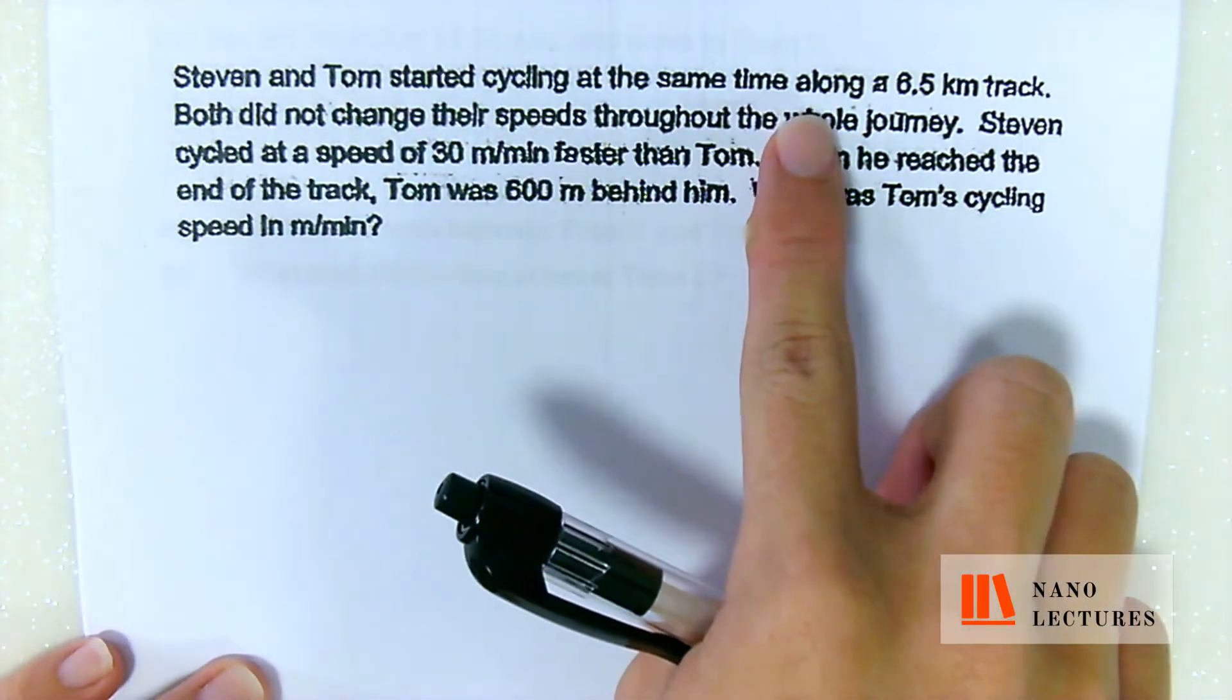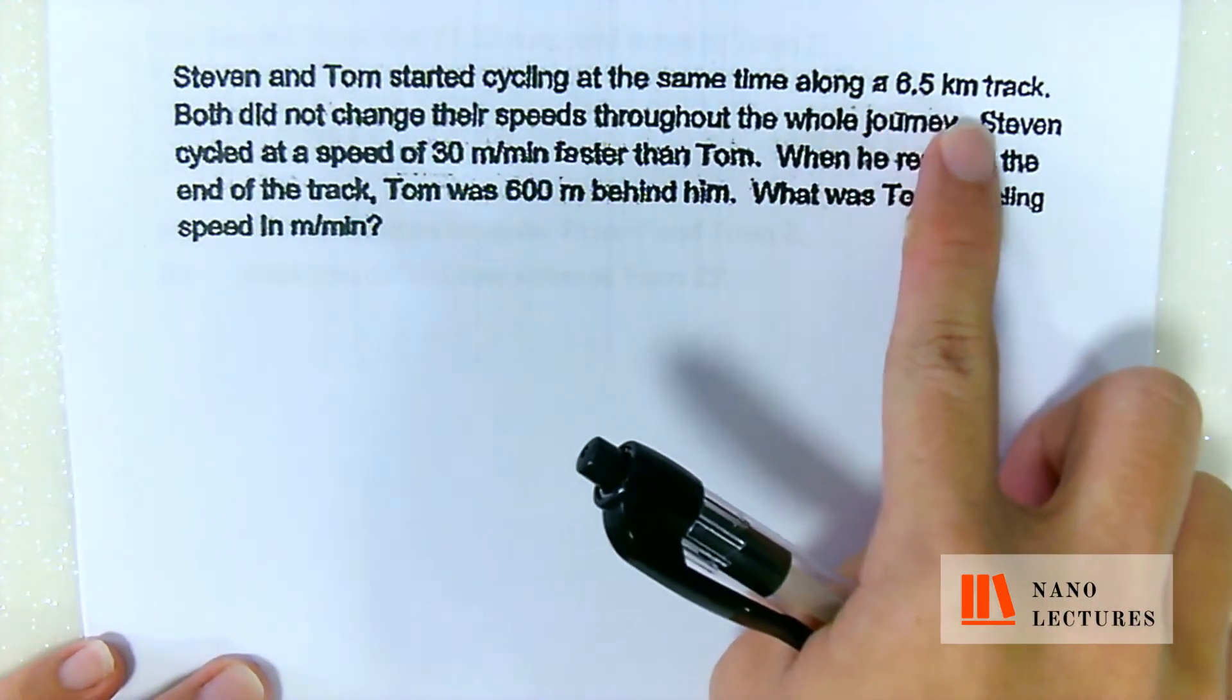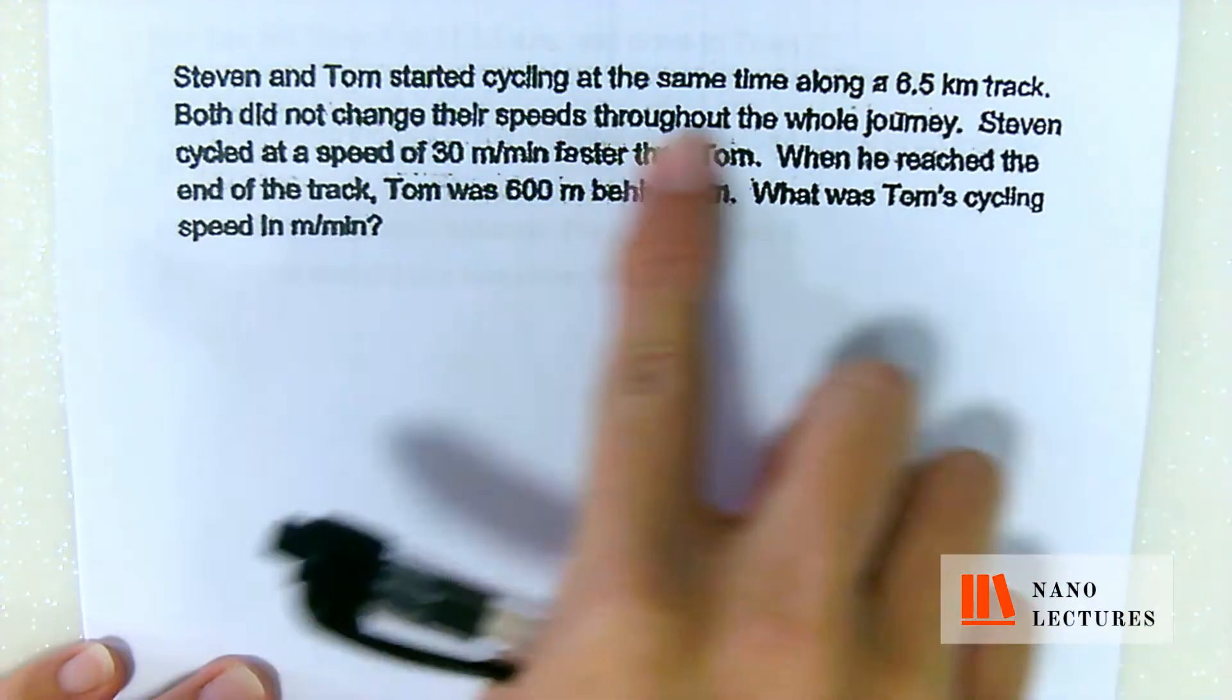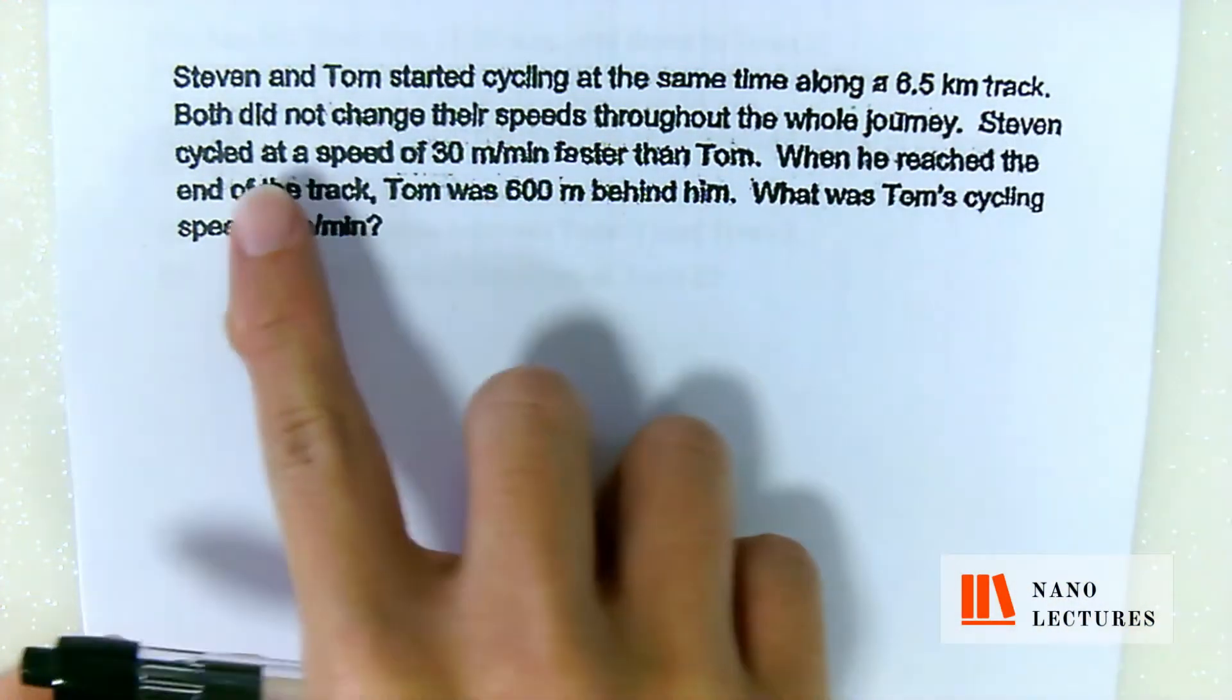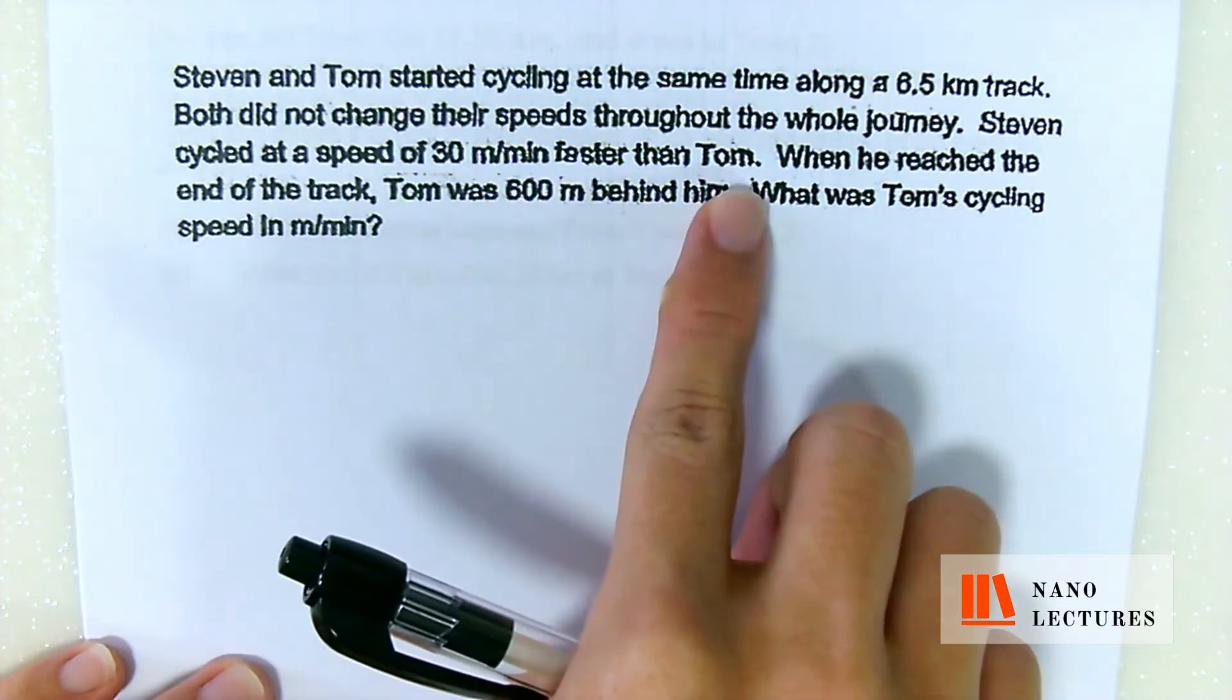Steven and Tom started cycling at the same time along a 6.5km track. They did not change their speed. Steven cycled at a speed of 30m per minute faster than Tom.